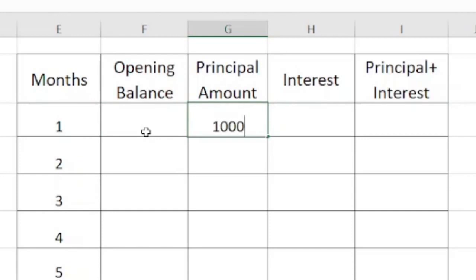My principal amount will be 1000. And how to calculate interest? It is very simple. Just select the principal amount times rate of interest 8% divided by 12, because I am paying installments on a monthly basis. So I have to calculate the interest per month, that's why I have divided 8% by 12. Now I will press enter. So my interest for the first month will be 6.67. Now what will be my principal and interest? Simply I can add the principal amount plus interest.